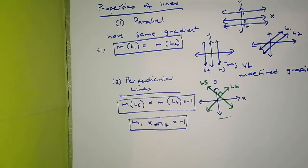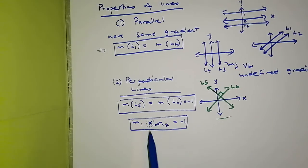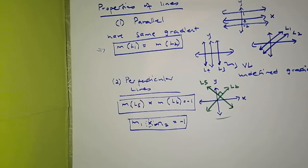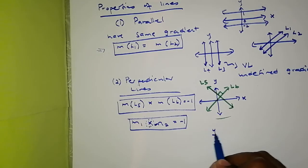To summarize the fundamental properties: when lines are parallel they have the same gradient, and when lines are perpendicular the product of their gradients equals negative one — meaning when you multiply their gradients together you get negative one. Let me make an example.